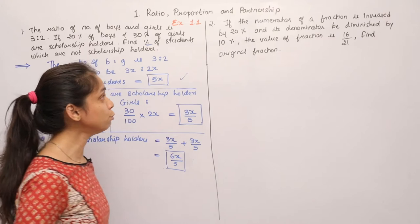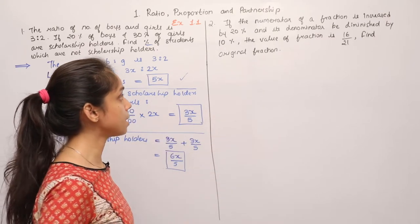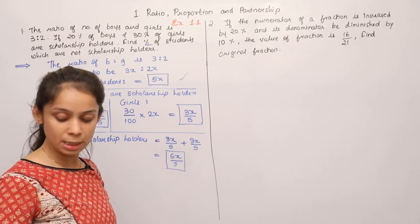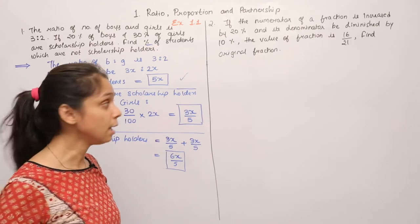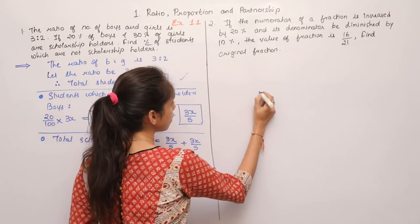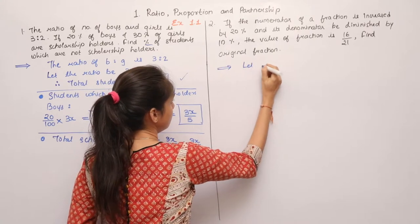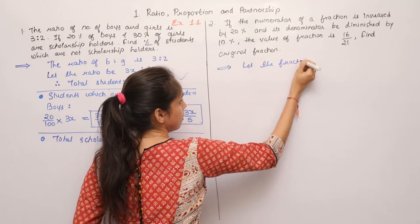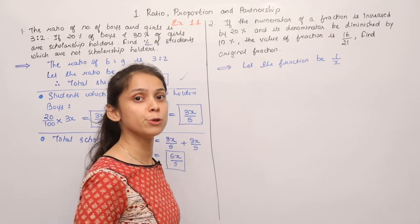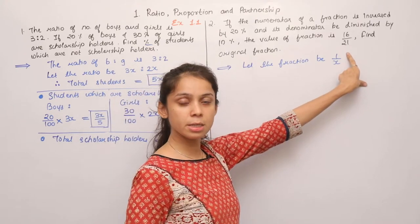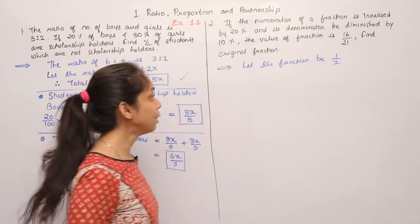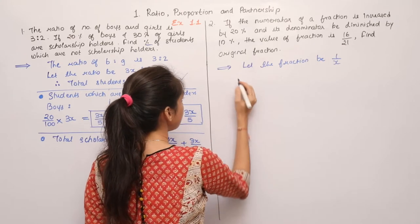Question 2: The numerator of a fraction is increased by 20% and the denominator is diminished by 10%. The value of the new fraction is 16 by 21. Find the original fraction. We are given a fraction whose original value we need to find, given a new value of 16 by 21 with these two conditions. Let the fraction be 1 by x — using a single variable makes it easier to solve. Numerator is 1 and denominator is x.